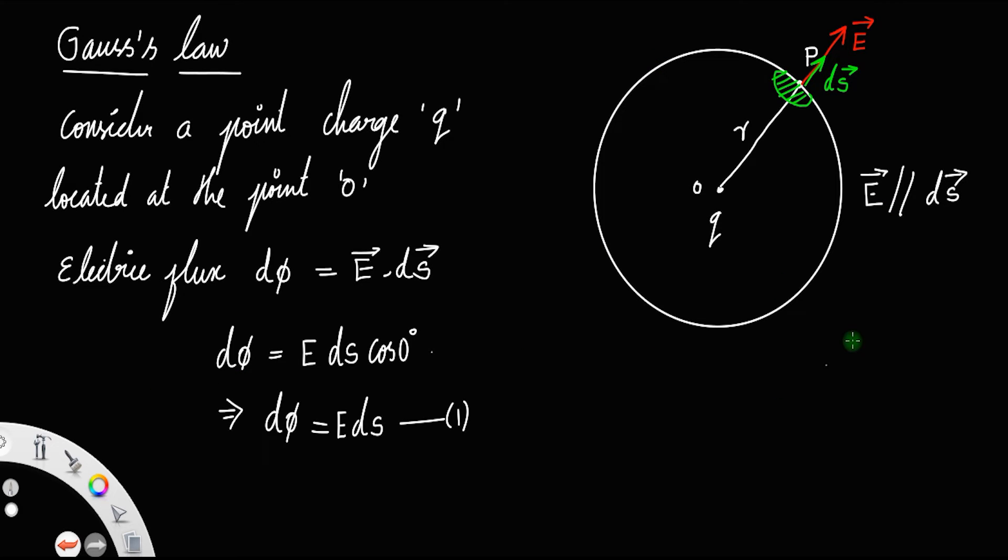In order to find the total electric flux, we must integrate equation 1, that is E ds. If you do this, you will get φ equals integral E ds. We have the expression for electric field equals 1 by 4π ε₀ charge divided by R square times ds.